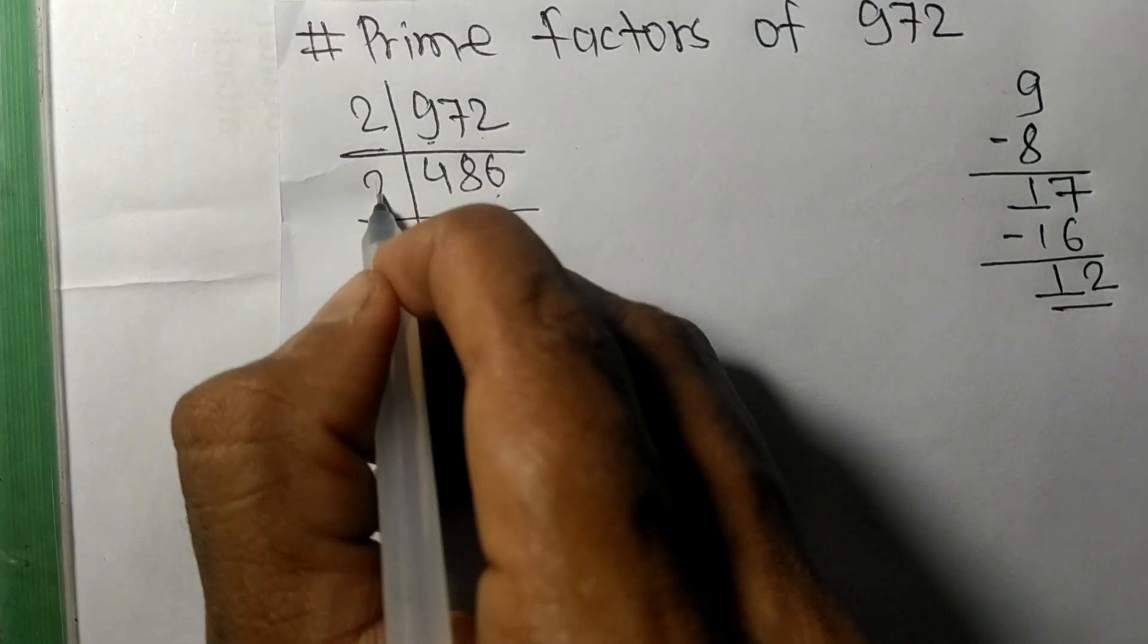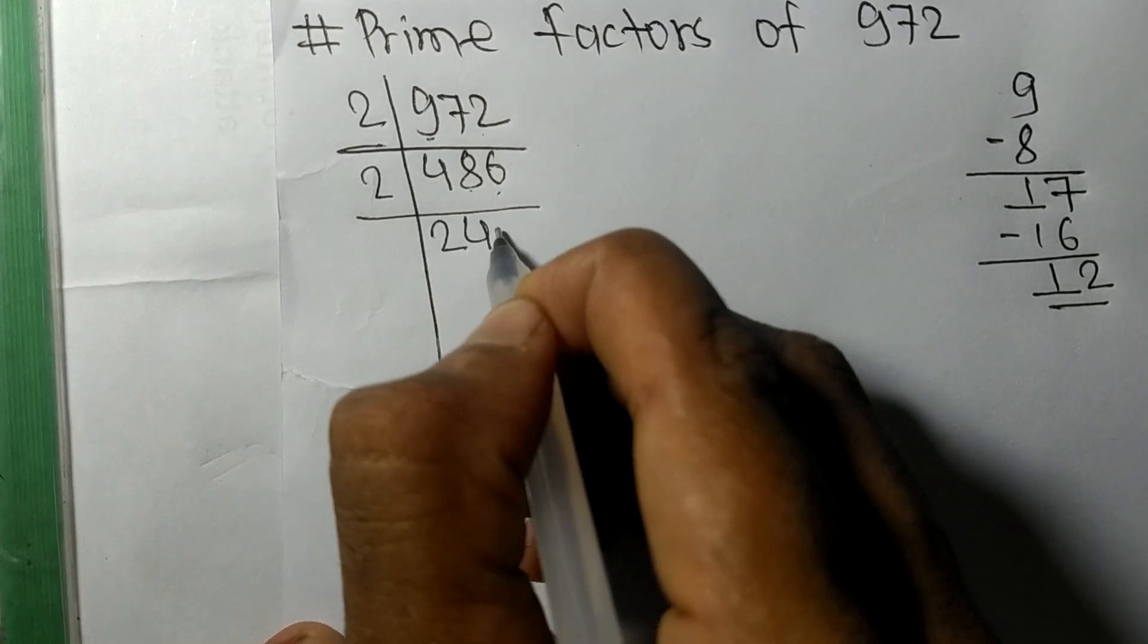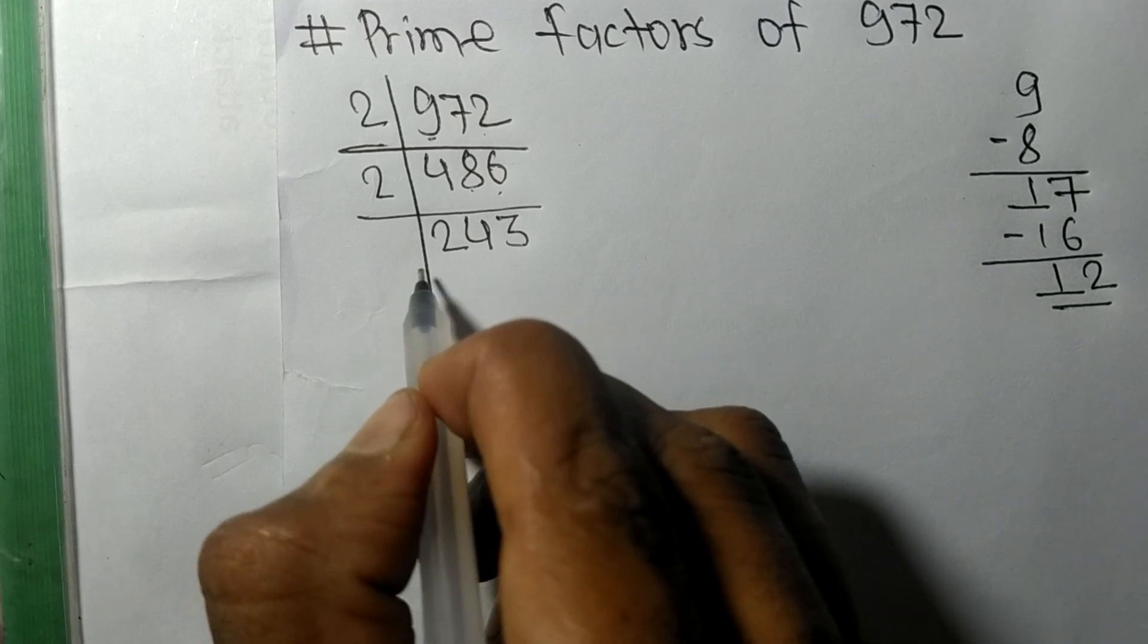Again it has even number 6 at last, so it is exactly divisible by 2. 2 times 2 means 4, 2 times 4 means 8, 2 times 3 means 6.